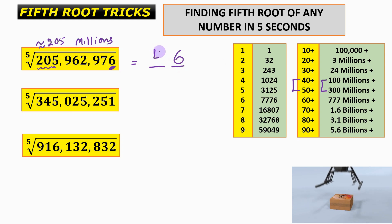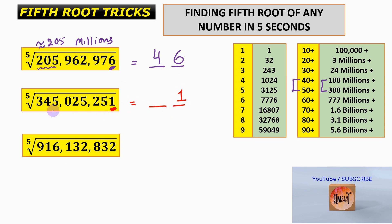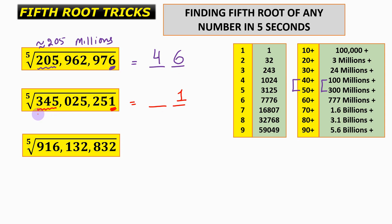Next: the unit place is 1, so we write 1. This number is approximately 345 million, which lies between 300 million and 777 million, so the number lies between 50 and 60. With the unit place equal to 1, our answer is 51.